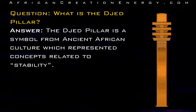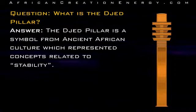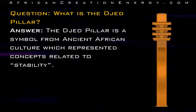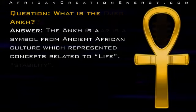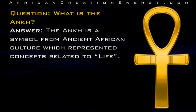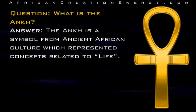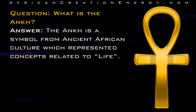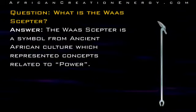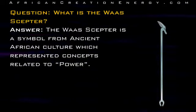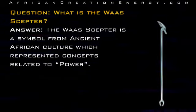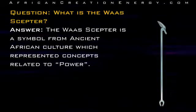Question: What is the Jed Pillar? Answer: The Jed Pillar is a symbol from ancient African culture which represented concepts related to stability. Question: What is the Ankh? The Ankh is a symbol from ancient African culture which represented concepts related to life. Question: What is the Wa-Sceptor? Answer: The Wa-Sceptor is a symbol from ancient African culture which represented concepts related to power.